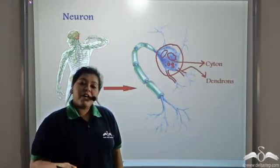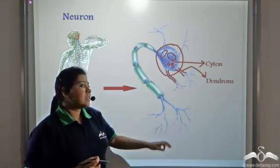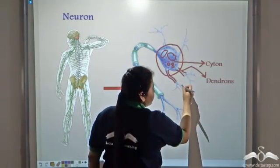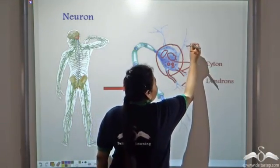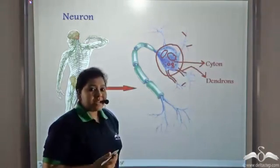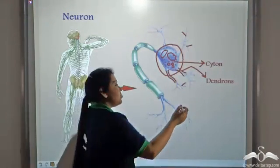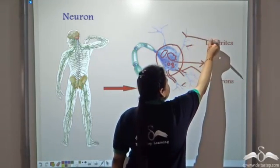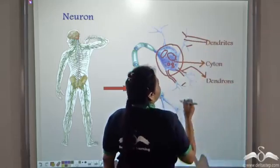Now further smaller processes come off from the dendrons. See, these are the smaller processes coming out from the dendrons. And these smaller processes are known as the dendrites. So these are the dendrites that are coming off from the dendron.